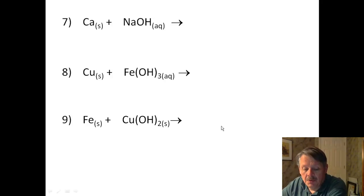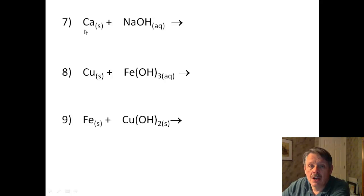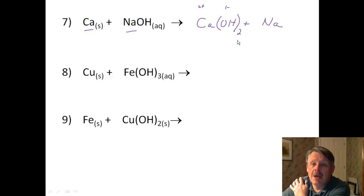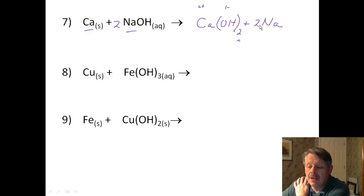Number 7: calcium and sodium hydroxide. Calcium is higher on the activity series than sodium, so we're going to get calcium hydroxide and sodium. Calcium has a 2+ charge, so I need 2 hydroxides because hydroxide has a 1− charge, giving Ca(OH)₂. Since I have 2 OHs, I need 2 NaOHs, but that means I have 2 sodiums, so I put 2 in front of sodium and I am now balanced.